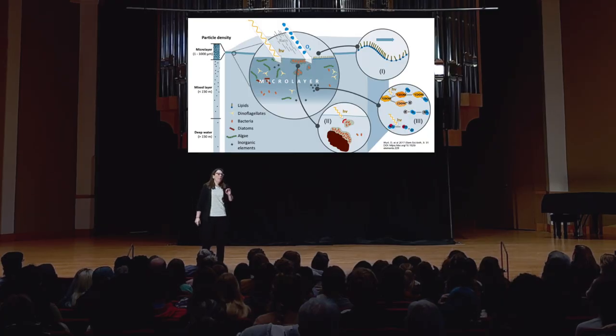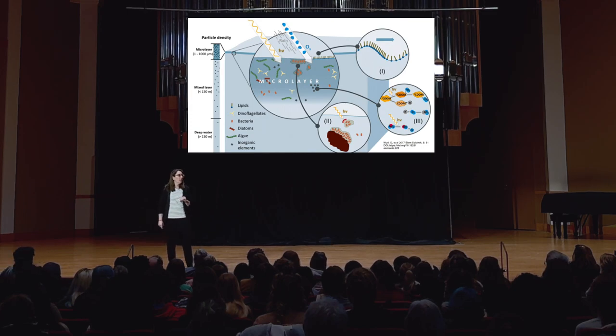Not that long ago, sea spray aerosols were approximated as just salt particles — sodium chloride — in our air. But they are actually way more chemically complex than that. The uppermost few layers of our ocean surface is a biofilm called the sea surface micro layer, and it is heavily enriched in so many things: organic molecules, lipids, fatty acids, viruses, bacteria, salt — you name it, it's up there. And when waves break via wind action on the ocean surface, all this stuff gets transported into our atmosphere via aerosols.